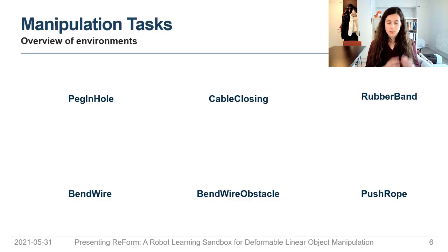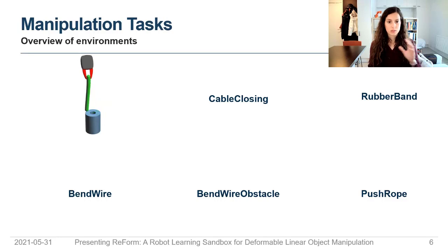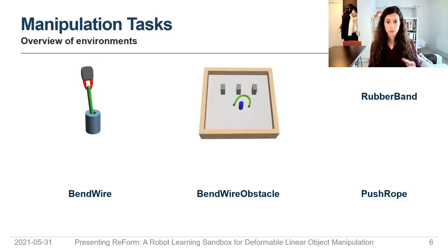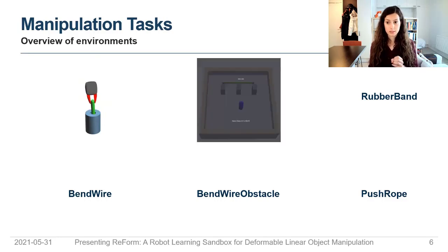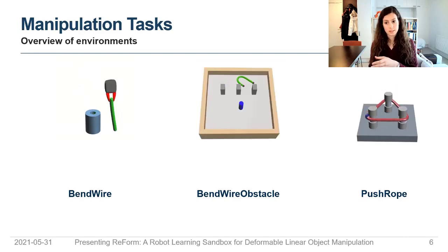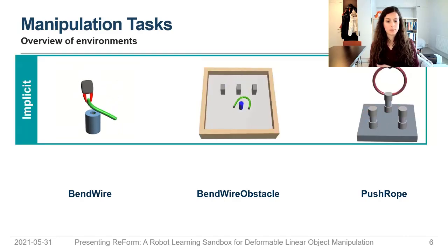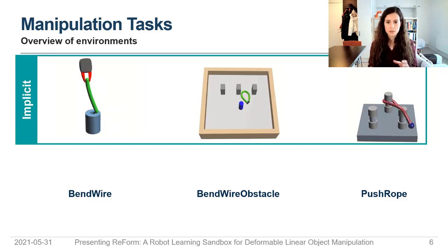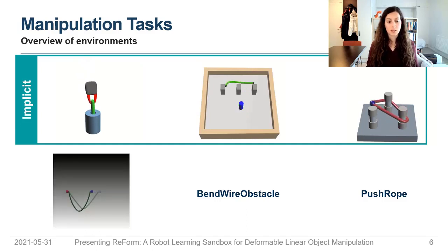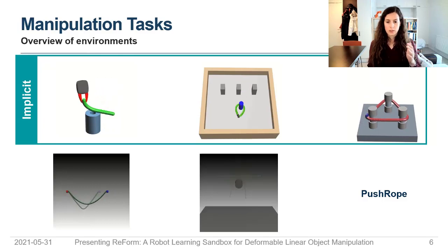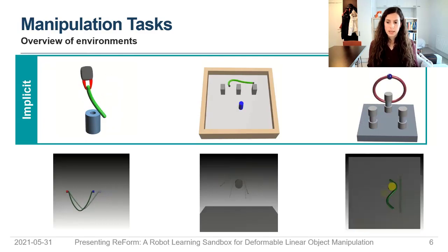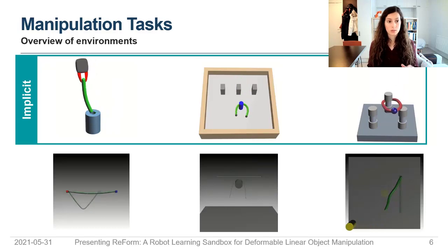For this, we proposed six environments: one where we want to insert a soft bag into a hole; cable closing, where we wrap a cable around a cylinder; a similar principle but with a rubber band. These are implicit shape control tasks — we don't care exactly how it looks, we just want the task to be completed. And then we have explicit shape control tasks like bending a wire, doing the same with an obstacle, and manipulating a rope on a surface.